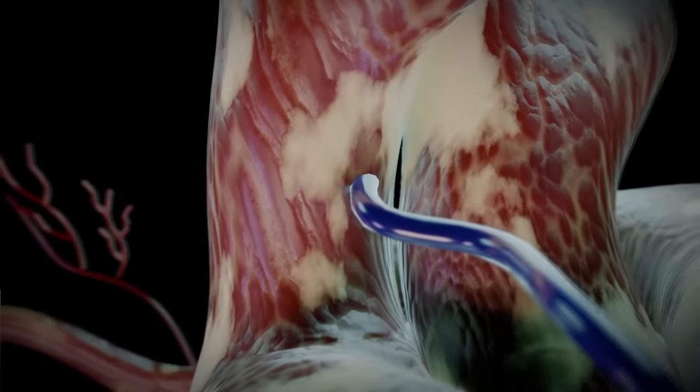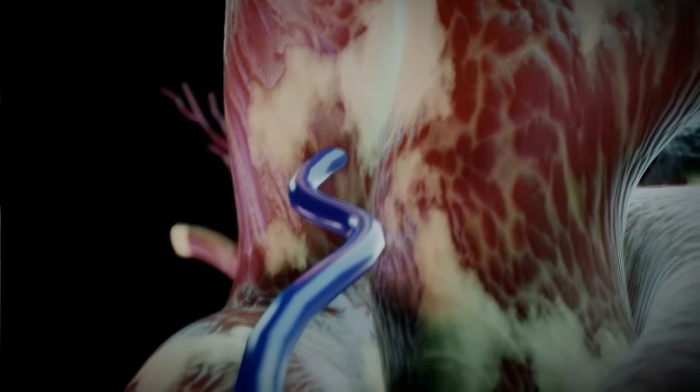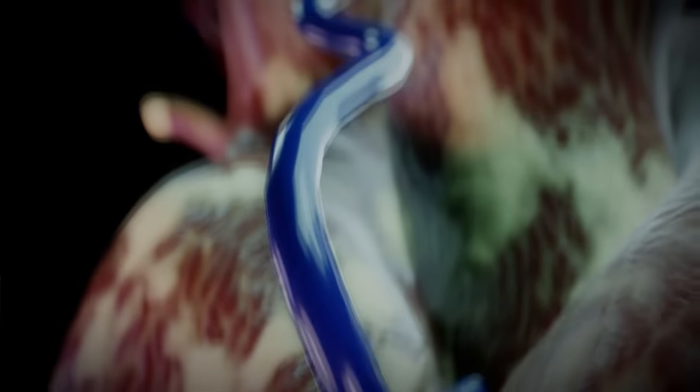For the saphenous vein graft, the surgeon will suture one end to the aorta and the other end to the narrowed artery just past the blockage.